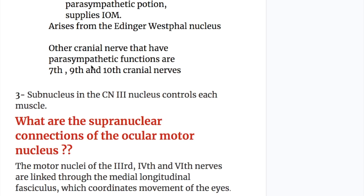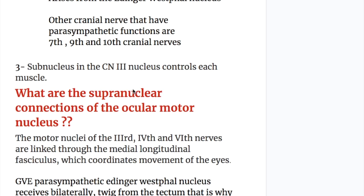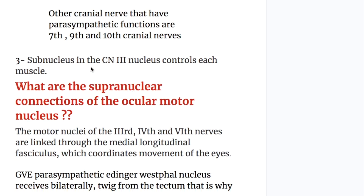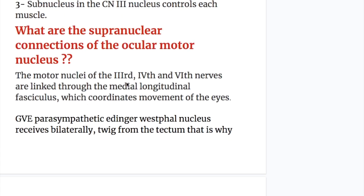The other cranial nerves that have parasympathetic functions are the seventh, ninth, and tenth cranial nerves. Number three, the subnucleus in the cranial nerve controls each muscle.